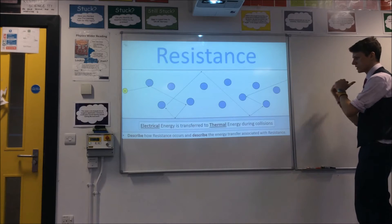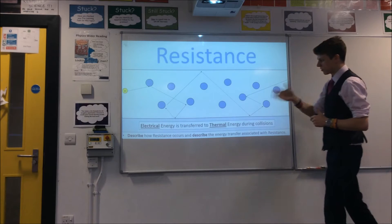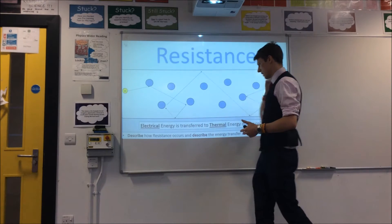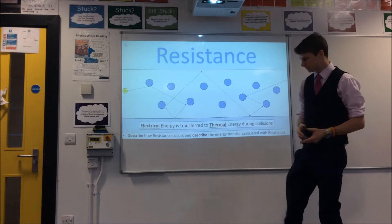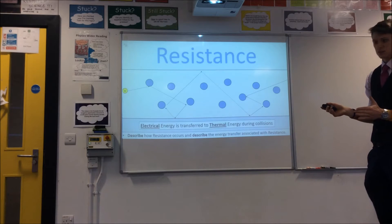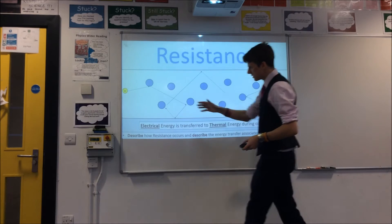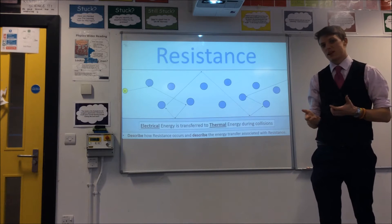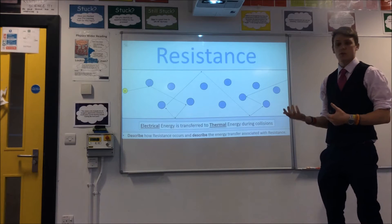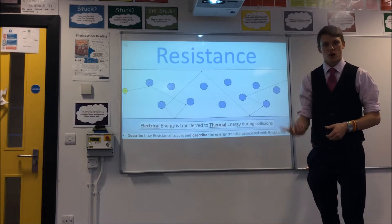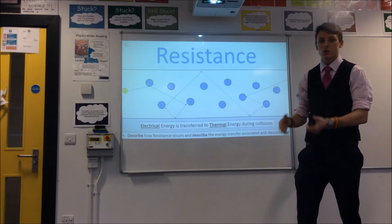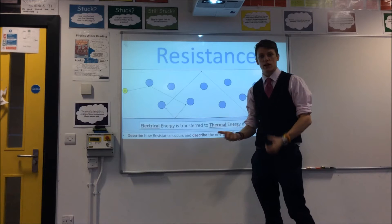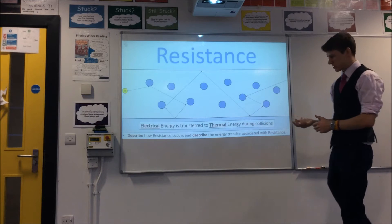So we've got a general trend of movement this way, but it can also be going the other way — up and down, backwards. And as the electron collides with these, what happens is it transfers some of its electrical energy into thermal energy. That's why resistors get hot when you use them, because that's what resistance is — these collisions transferring electrical energy to thermal energy.